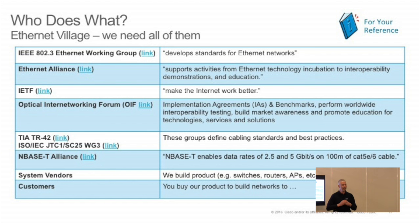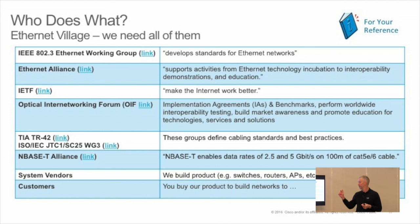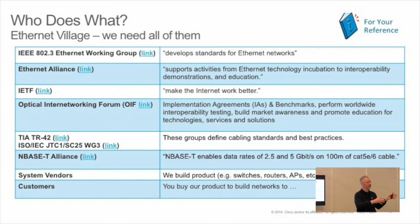TIA-TR42 and ISO/IEC JTC SC25 Working Group 3 are the cabling bodies. In Ethernet, we say we need a cable of a certain type — these are the guys who tell you how to build that cable. TIA-TR42 writes the specs for North America — structured cabling recommendations for layout, connectors, bundling rules. ISO/IEC is the European equivalent. The 802.3 standard will reference off to the TIA or ISO/IEC standards.